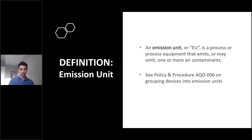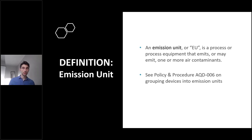The next important definition is emission unit. An emission unit is a process or process equipment that emits or may emit one or more air contaminants. This term is frequently used throughout the PTI process, and emission unit is often abbreviated as EU.